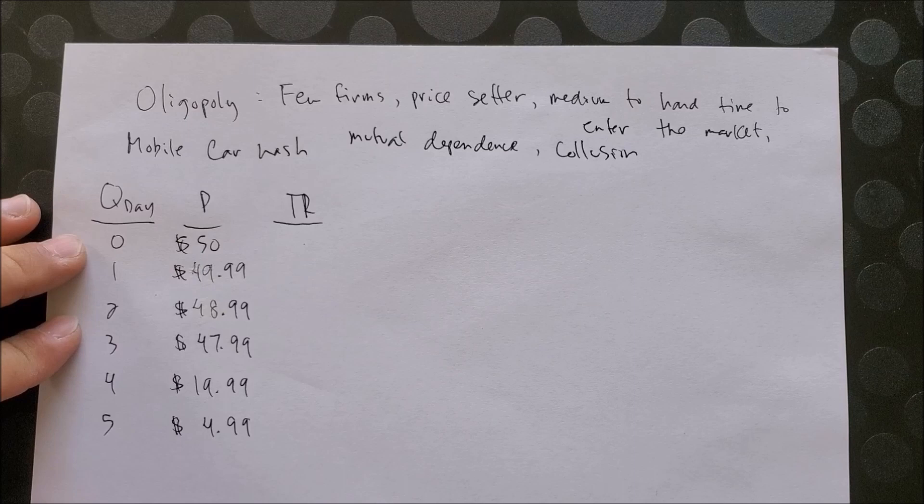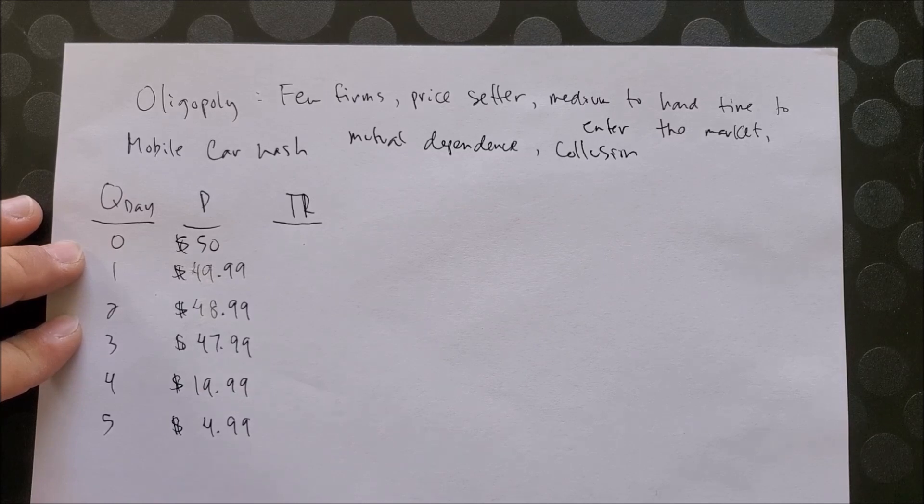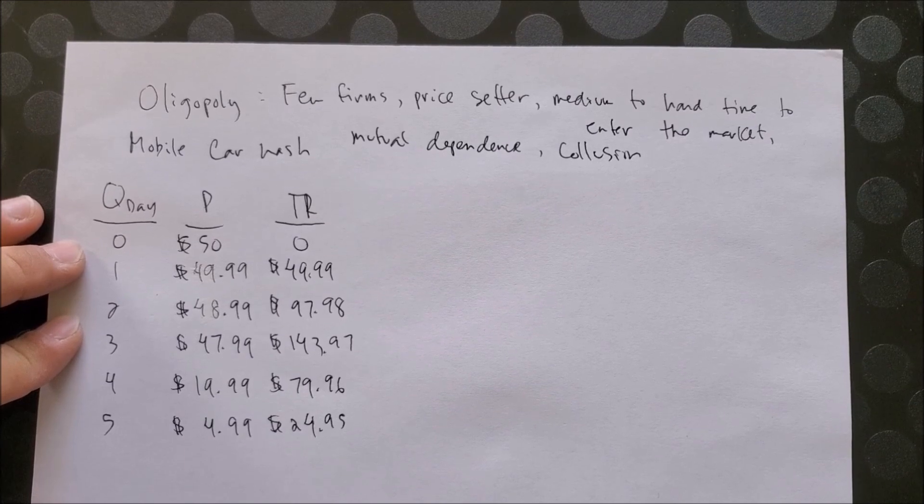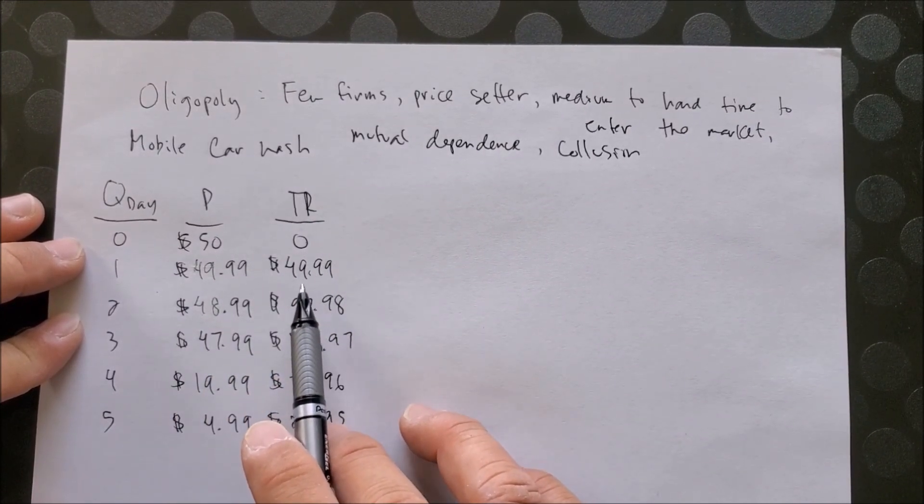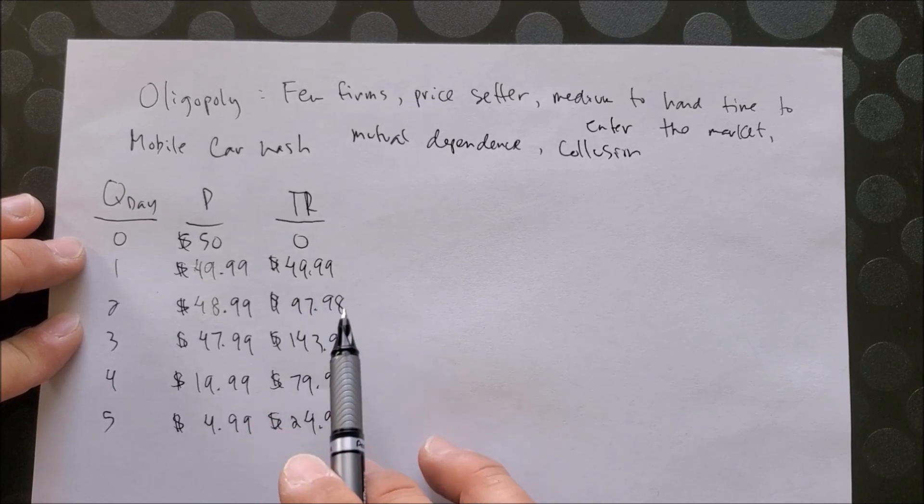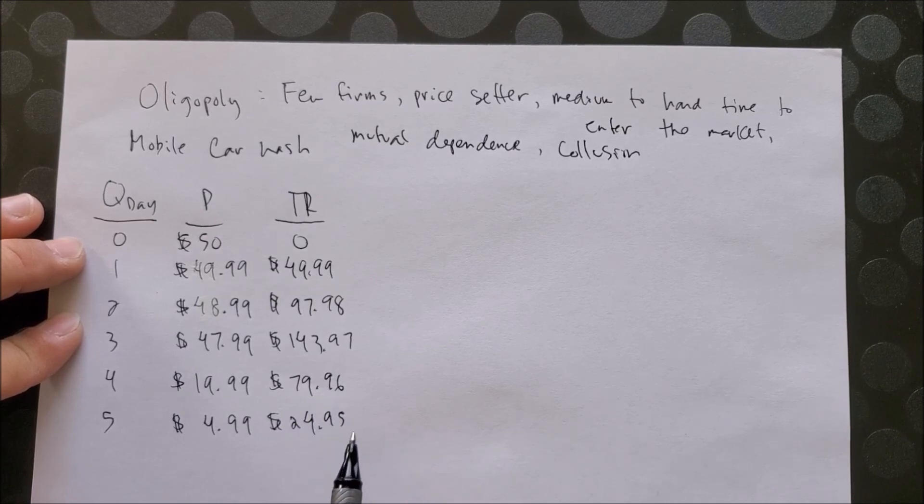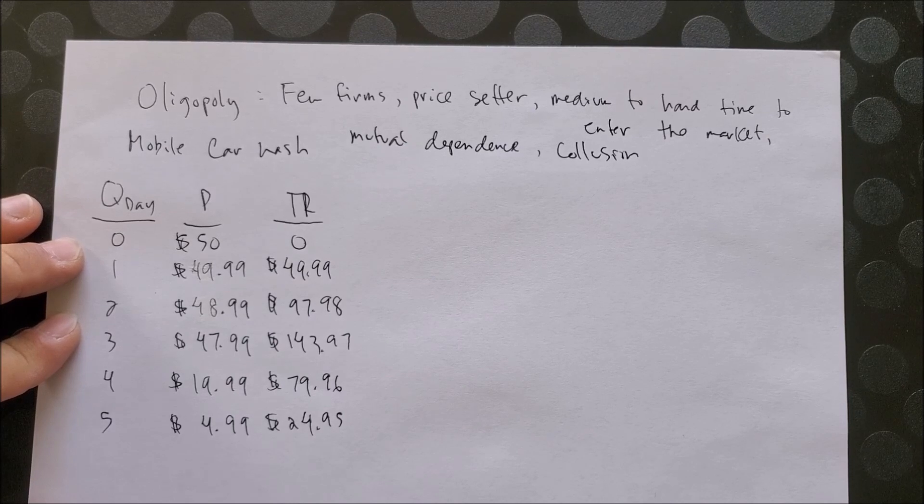Let's do that now. You should have gotten total revenue as the following: for zero quantity of vehicles, zero, and then $49.99, $97.98, $143.97, $79.96, and then $24.95.